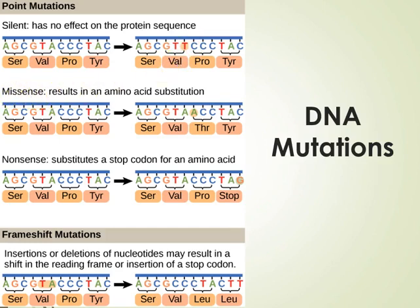A missense mutation is also a point mutation. Here you can see CCC — adenine was placed instead of cytosine, giving us ACC. ACC codes for a different amino acid than CCC. If a different amino acid is substituted, it can completely change the protein being formed. So this is a point mutation that could have devastating impacts.